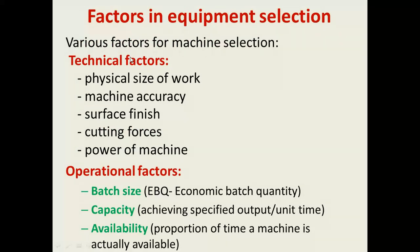There are two categories of factors in equipment selection: technical factors and operational factors. Technical factors include physical size of the workpiece, machine accuracy, surface finish, cutting forces, and power of the machine. Operational factors include batch size — that is economic batch quantity — capability in achieving specified output per unit time, and availability, which is the proportion of time a machine is actually available.